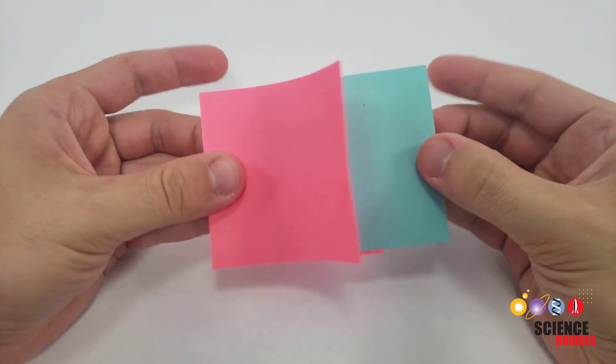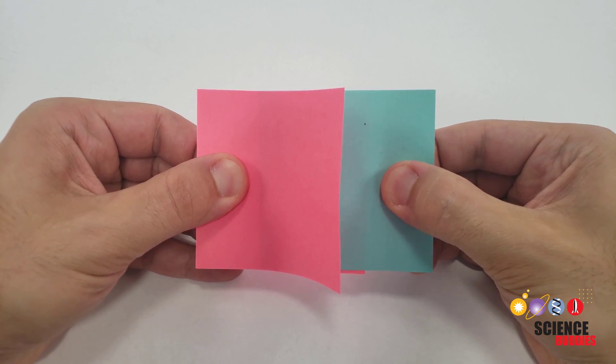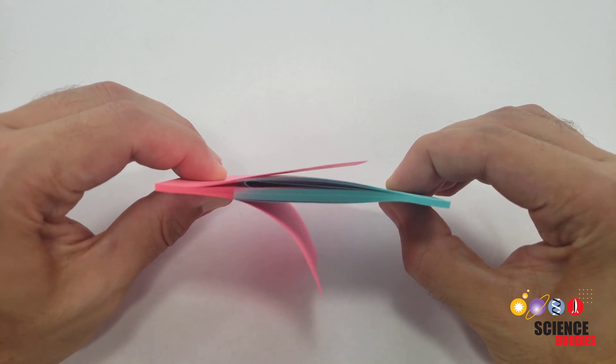You might be wondering what exactly is going on here. How can it be so hard to pull such tiny pieces of paper away from each other?